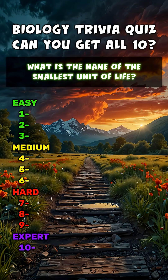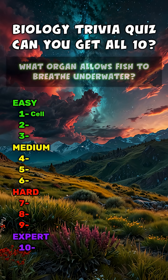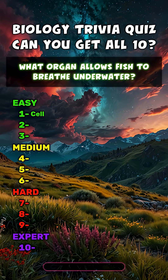What is the name of the smallest unit of life? Cell. What organ allows fish to breathe underwater? Gills.